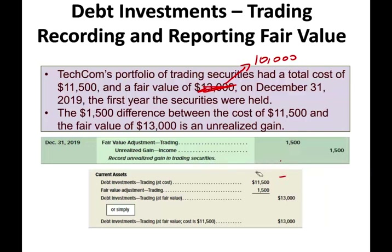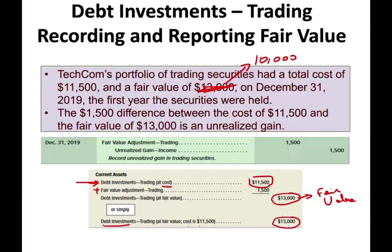How do we present these on the balance sheet? We show the investment at cost $11,500, then add the fair value adjustment of $1,500, reporting it at fair value. Alternatively, we can report it simply as investment — trading at fair value: cost $11,500, fair value $13,000. This is how we account for it at end of period.